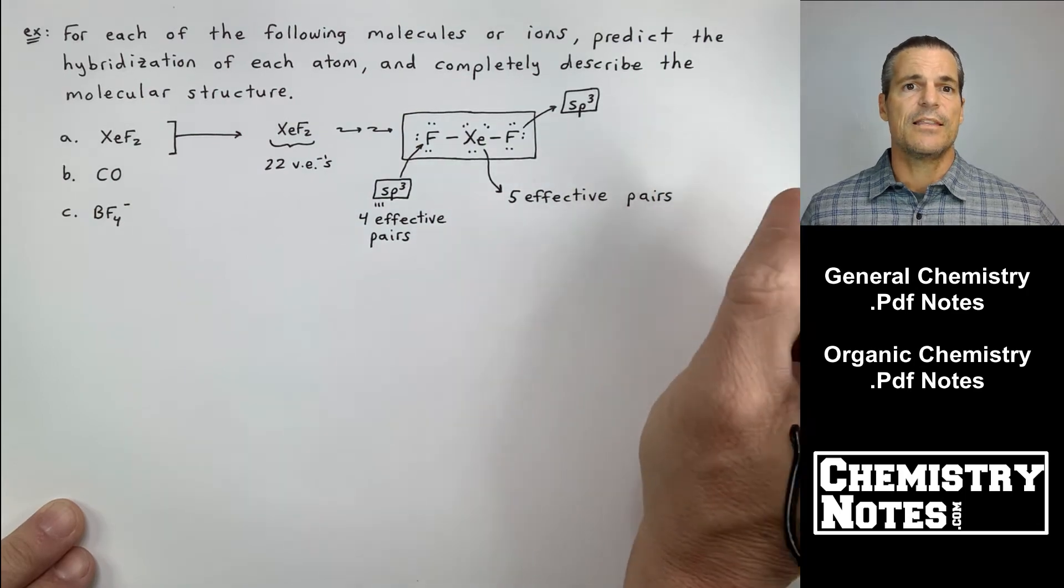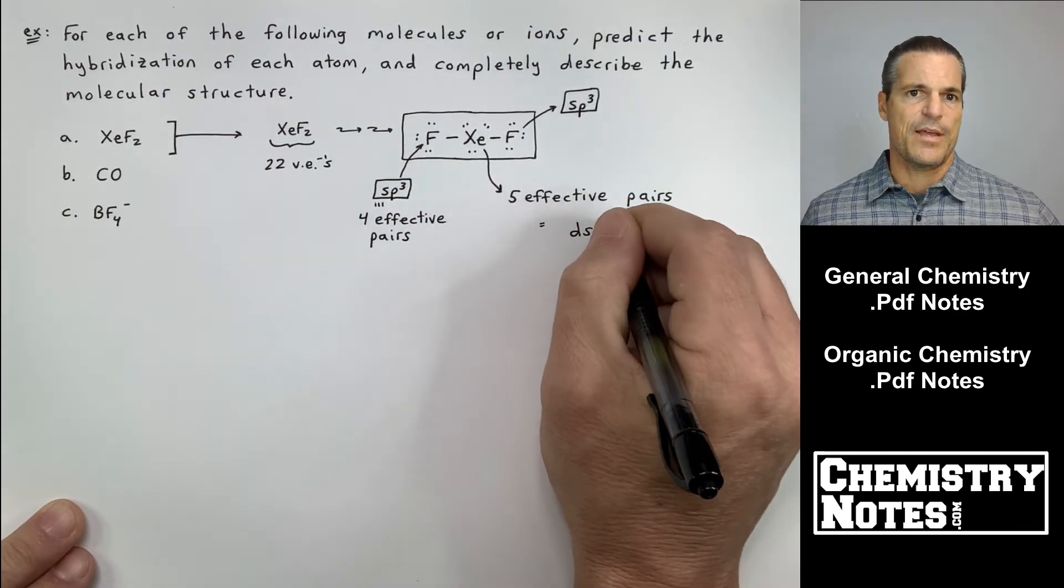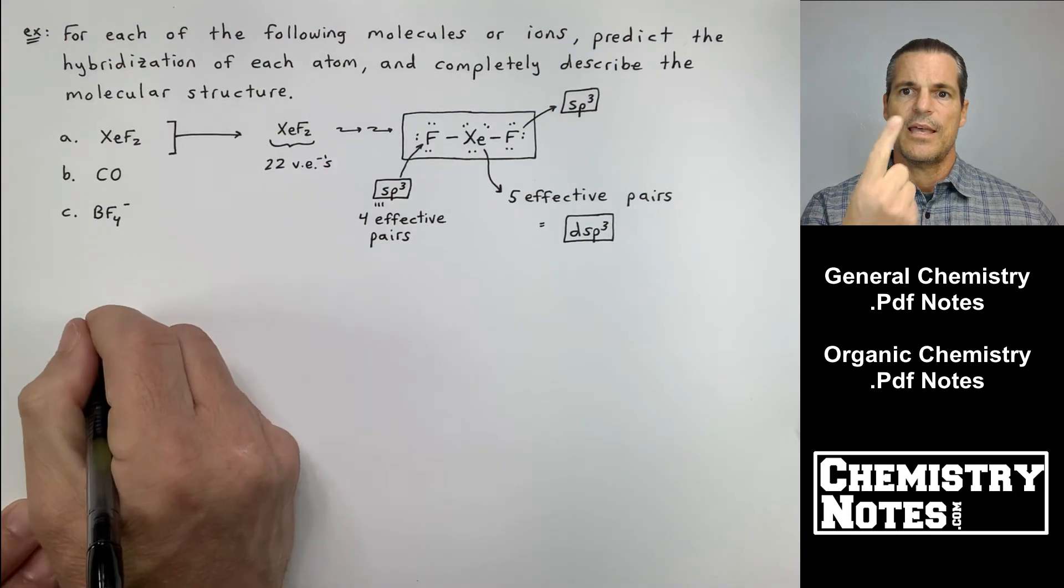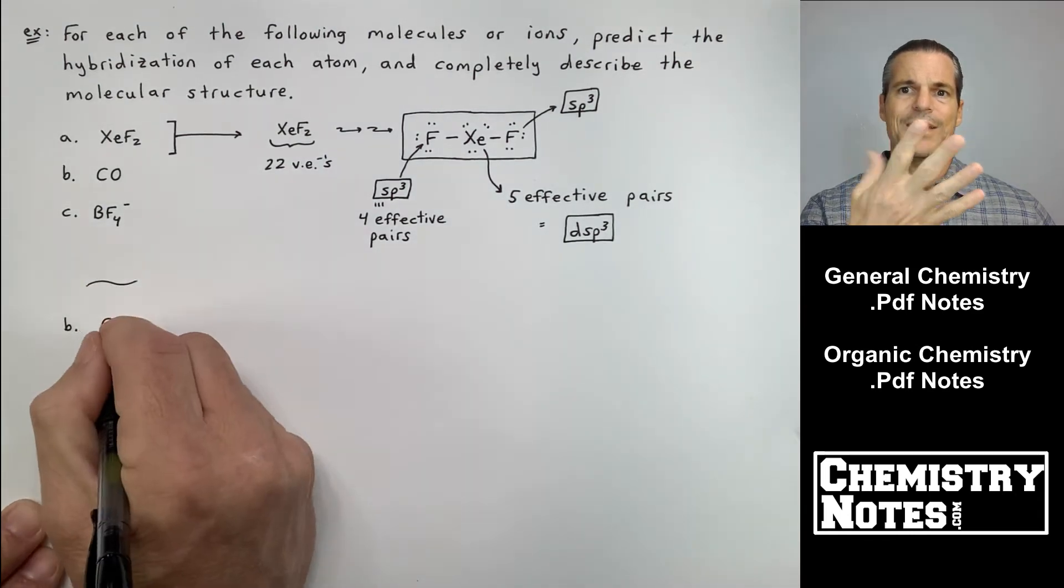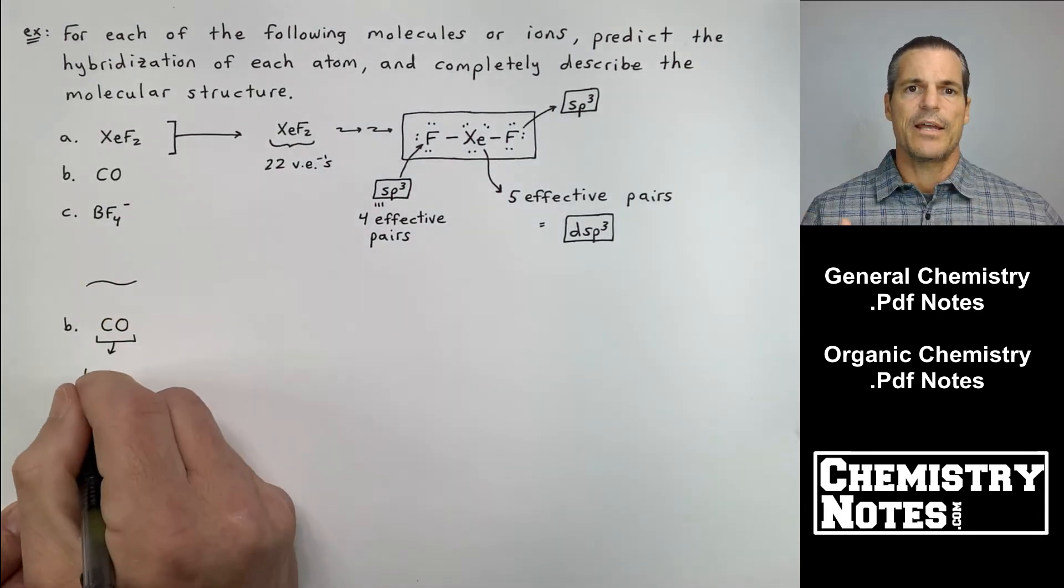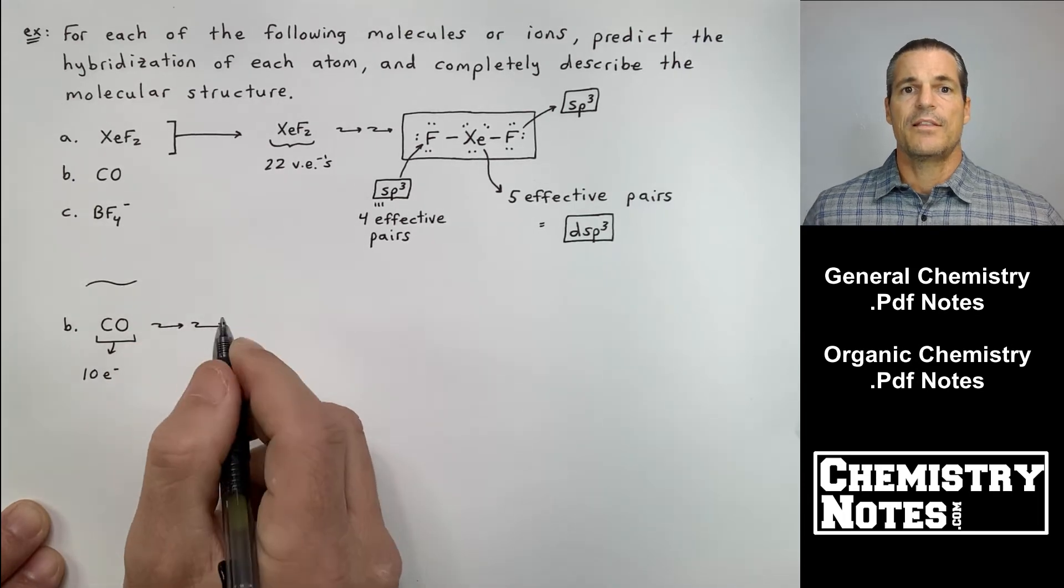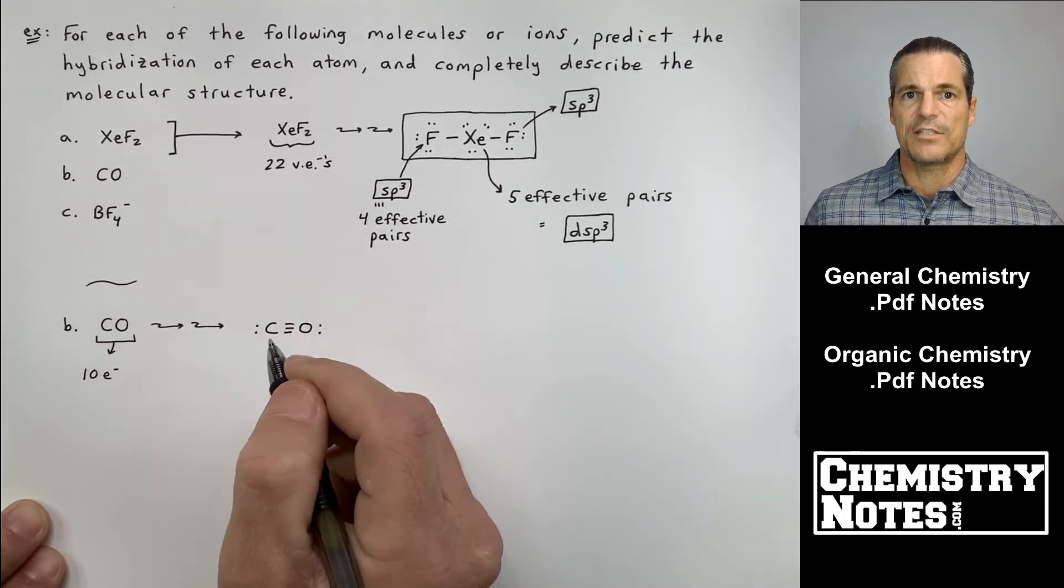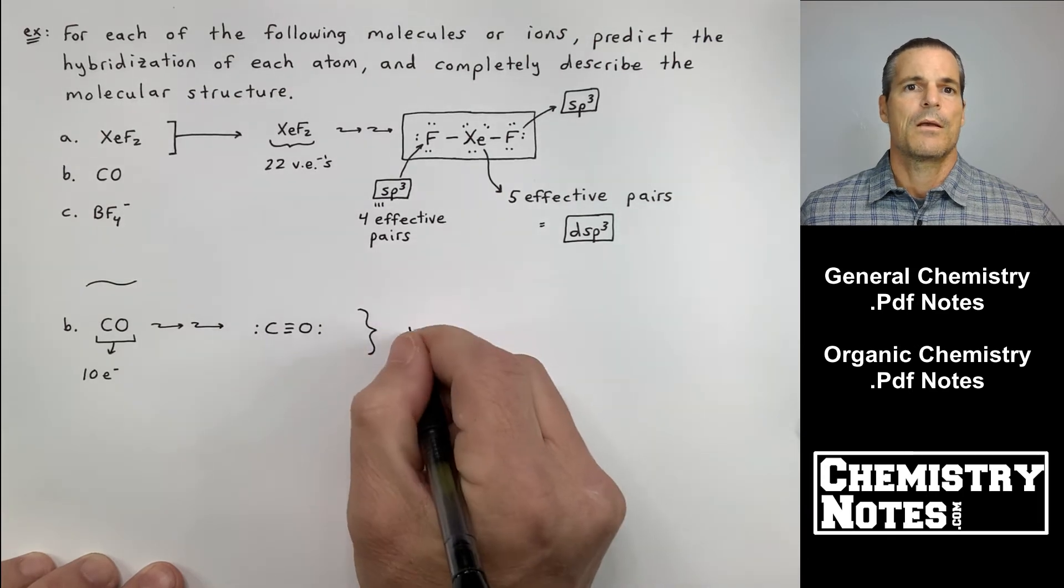The Xe in the middle has five effective pairs. So if you look at my hand here, five would be S, P1, P2, P3, D. And then I write the D first, DSP3. The F on the far right is the same as the F on the far left, SP3 hybridization.